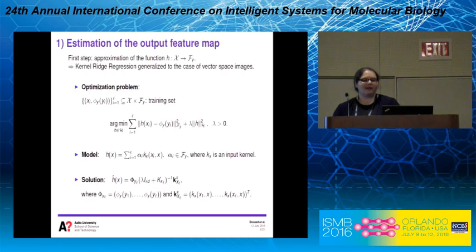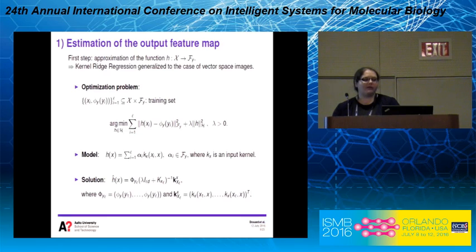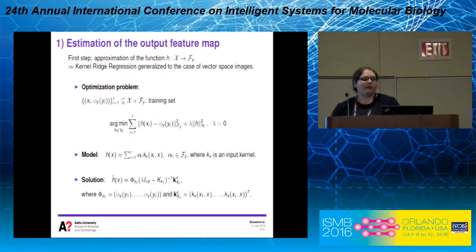I will now present the main technical elements of this method; for more detail, please see our paper. The first step consists in approximating the function h from x to F_y using a regression method. Since the output is vector-valued rather than a scalar, we use a kernel ridge regression method generalized to the case of vector-valued functions. The optimization problem has two terms: the first minimizes the least-squares error with the feature vector we want to learn, and the second is a regularization term to avoid overfitting.